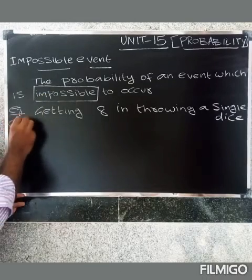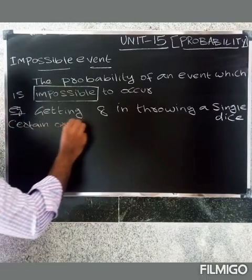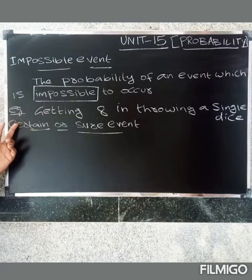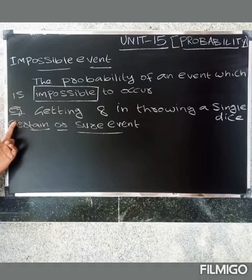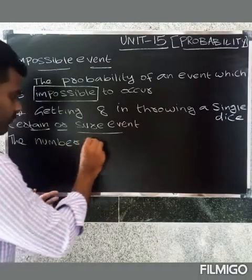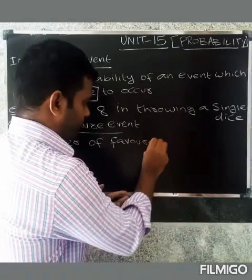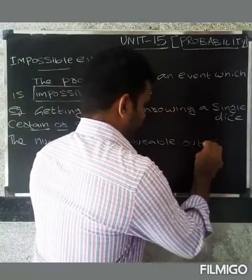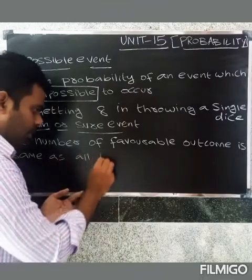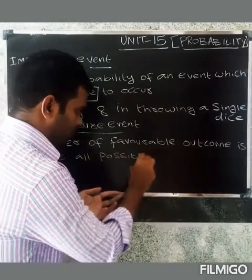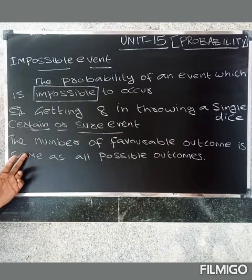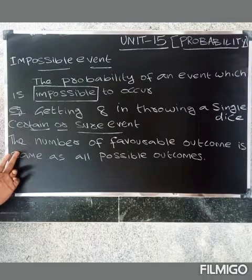The second special event is a certain or sure event. In a certain event, the number of favorable outcomes is the same as the number of all possible outcomes.